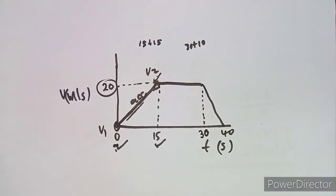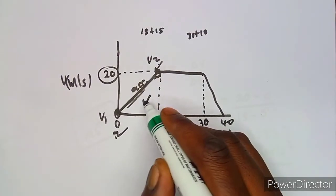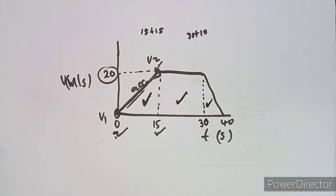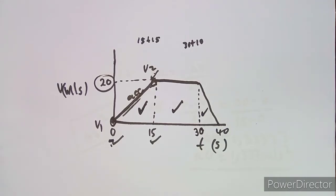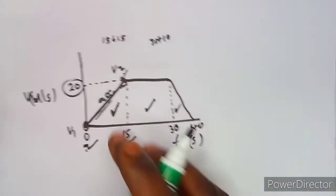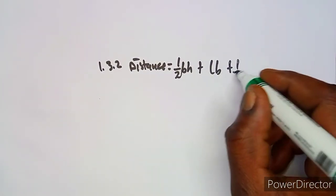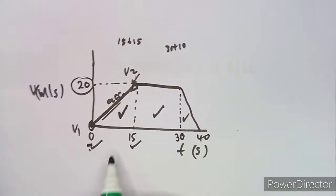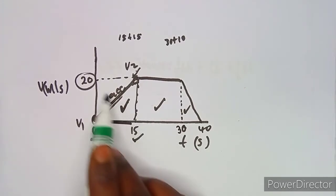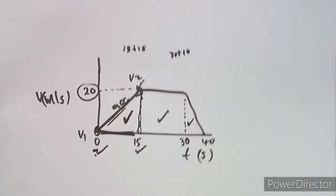For question 1.32, calculate the total distance of the entire motion. Distance equals the area under the velocity-time graph. The graph consists of a triangle, a rectangle, and another triangle. We calculate: area of triangle + area of rectangle + area of triangle.